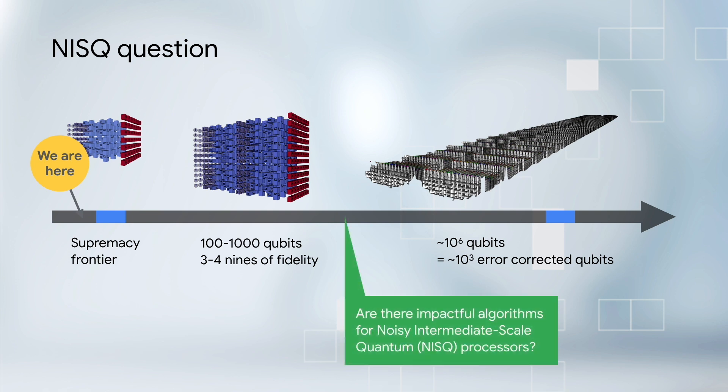We built CIRQ for NISQ computers and to aid in this discovery. Because CIRQ is focused on NISQ computers and not on quantum error corrected computers, we made some choices that we believe are important for these near-term devices. For example, one choice we made is that the programmer coding for NISQ algorithms needs to be very aware of the idiosyncrasies of the hardware upon which the quantum computation is run. Hardware is not abstracted away in CIRQ.